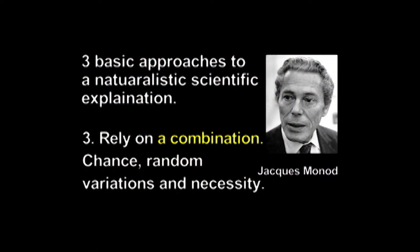Monod said there's also a third approach which combines chance variations with law-like processes of necessity. That's kind of what Darwin did in combining natural selection and random variations, and he said that's an acceptable scientific approach too. So if you're addressing the question of the origin of life from a naturalistic or materialistic point of view, you want to explain the origin of life by either chance, necessity, or the combination of the two.